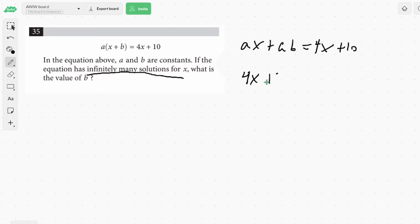And then we have plus 4b equals 4x plus 10. And then we have to see what value of b makes 4b equal to 10. So do 4b equals 10, and we get b equals 2.5. So 2.5 would be our solution.